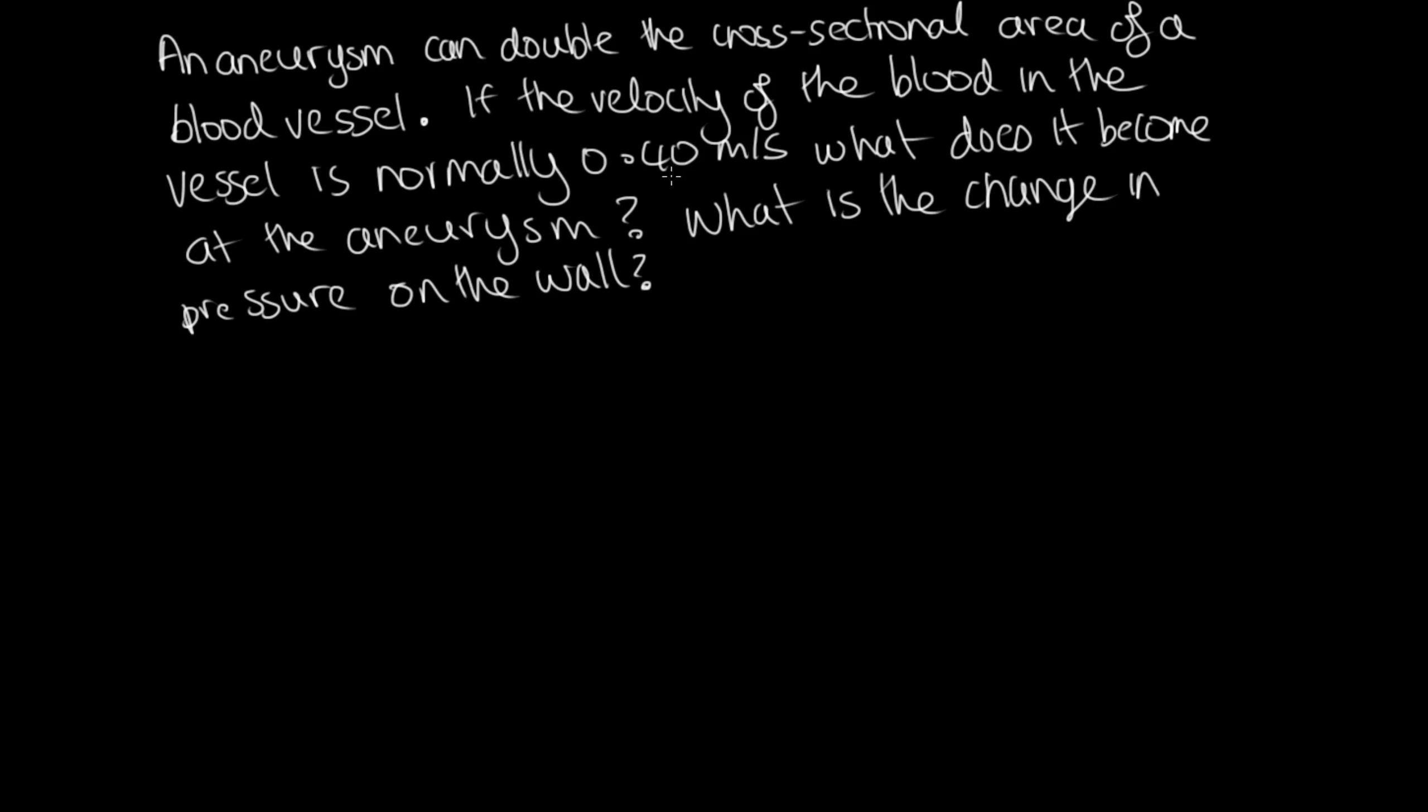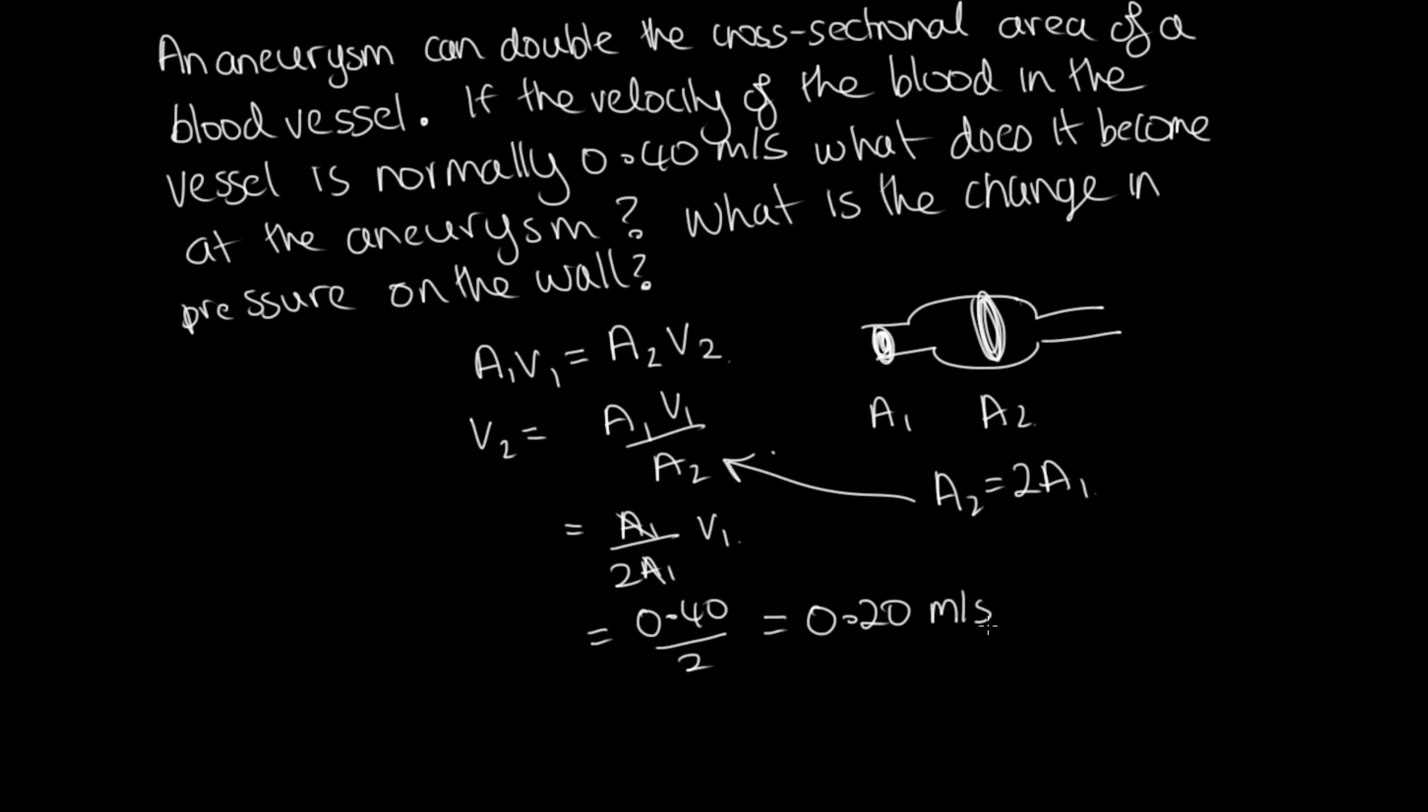So to work out what the velocity of the blood is, we're going to need to use that the volume flow rate is constant. So the cross-sectional area at place 1 times the velocity at place 1 is equal to the cross-sectional area at place 2 times the velocity at place 2. And let's call the place with the aneurysm place 2. So we've got A2 here and we've got A1 here. And we know that A2 is equal to 2A1. So what we're trying to work out is the velocity in this aneurysm. So we've got that the velocity in the aneurysm is equal to A1V1 on A2. And now we'll substitute this in here. So we've got A1 on 2A1 times V1. And so this is equal to 0.40 on 2, which is equal to 0.20 metres per second. So we've now calculated the velocity of the blood through the aneurysm.